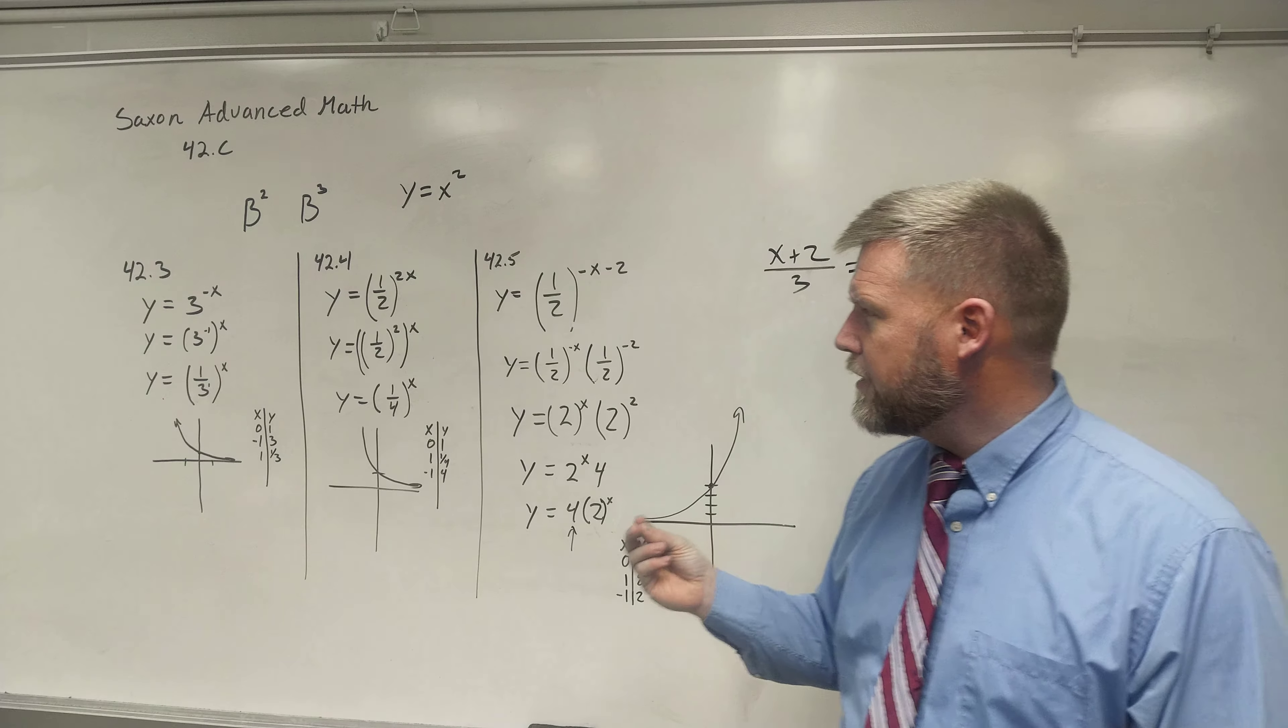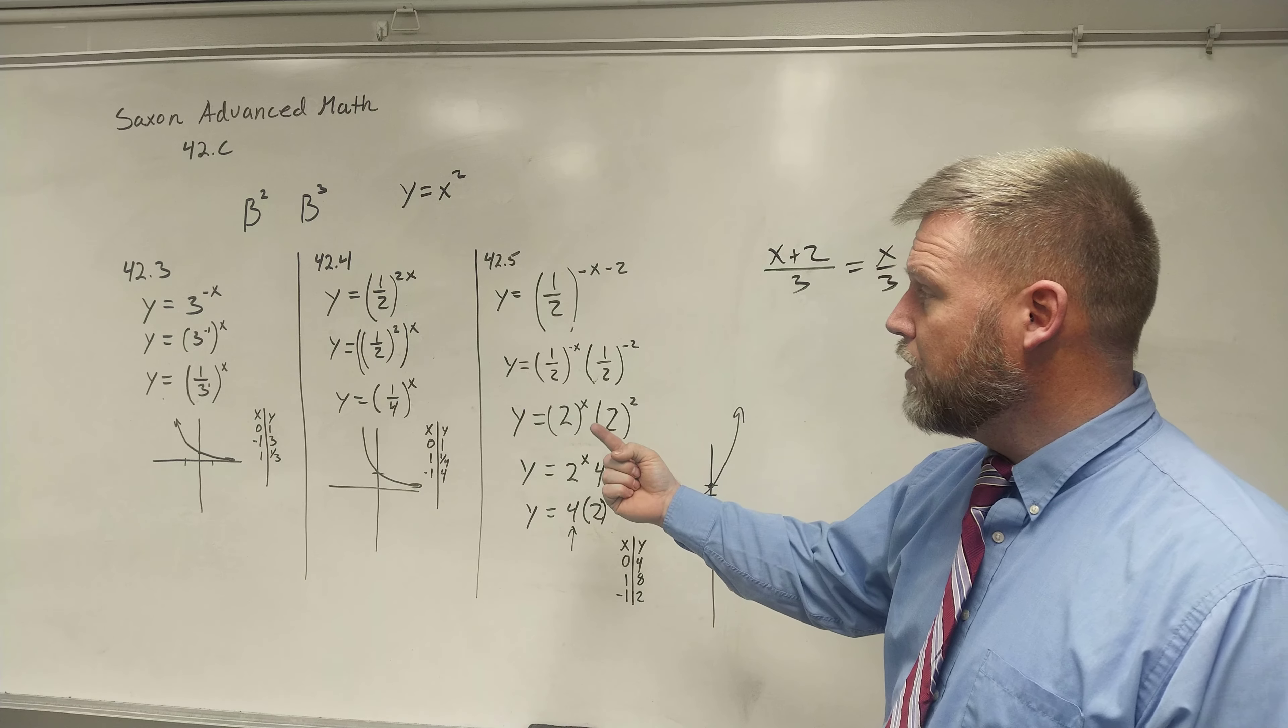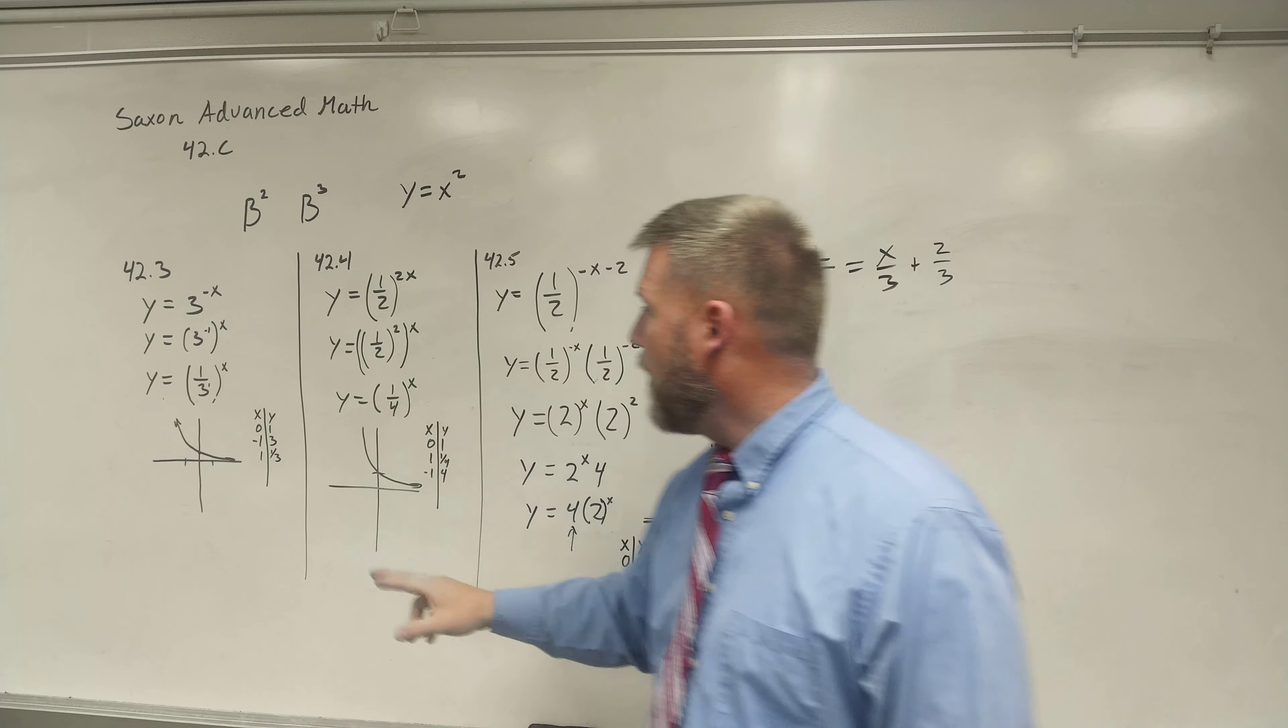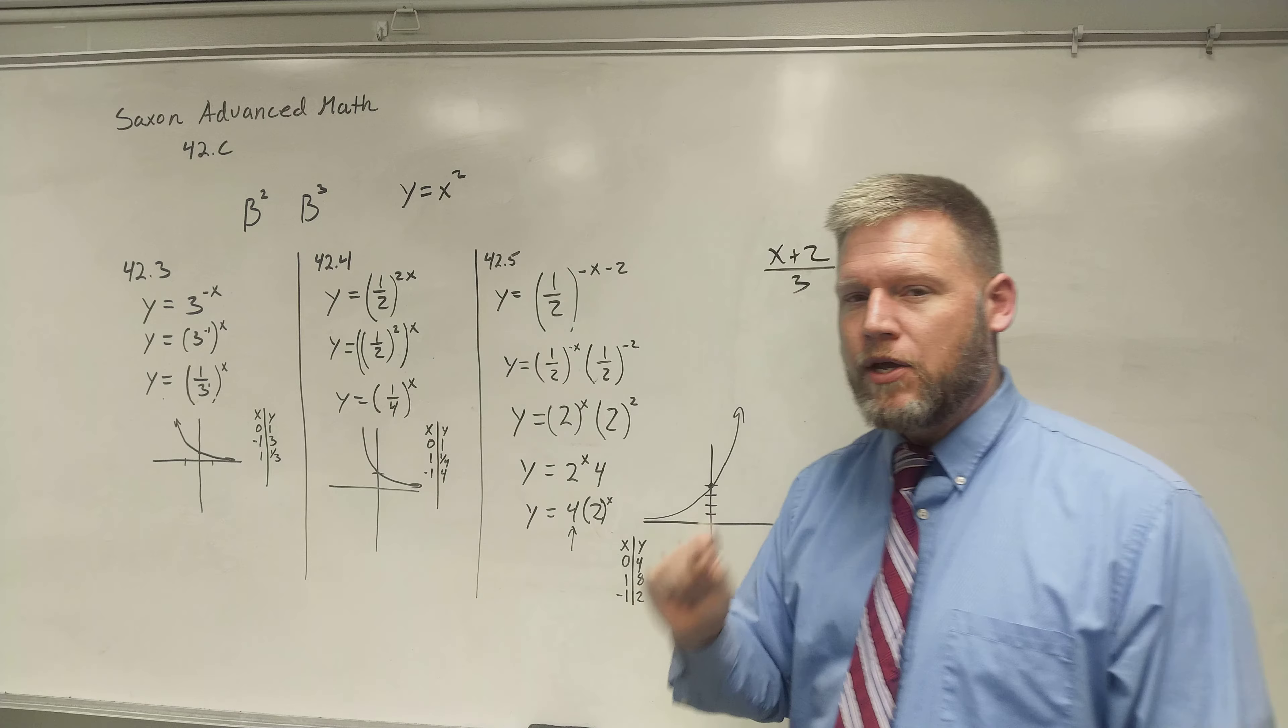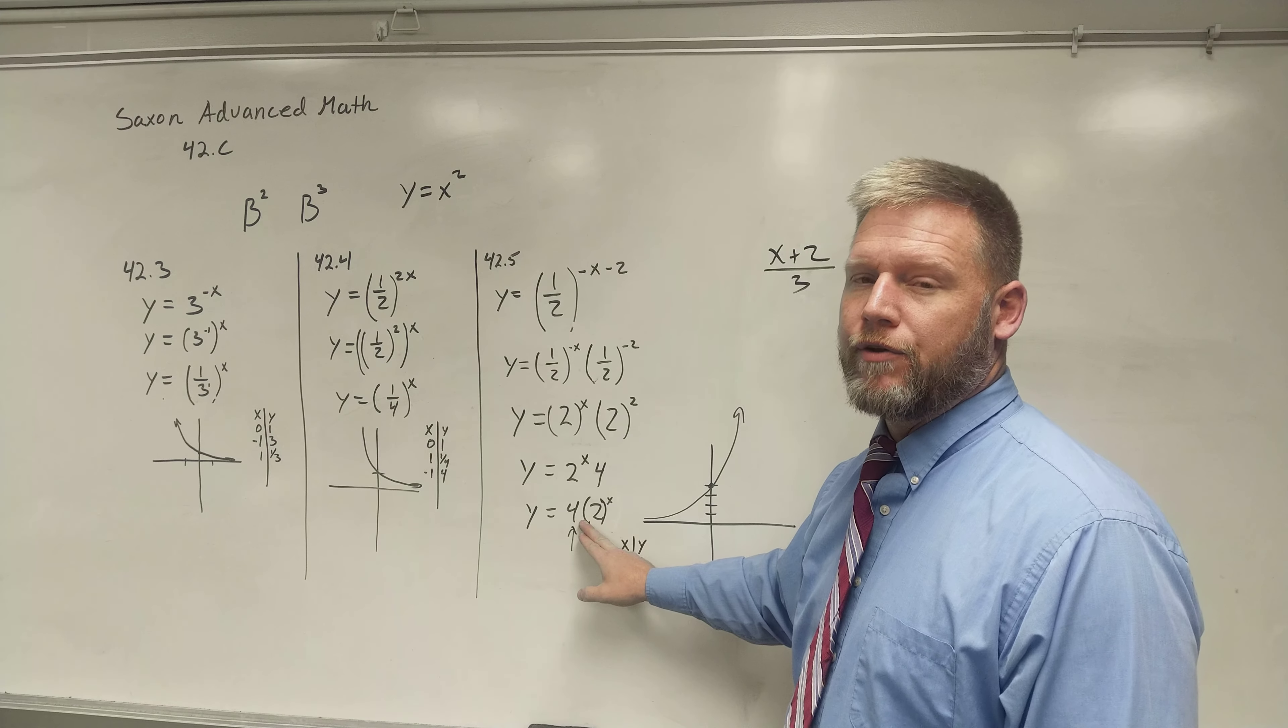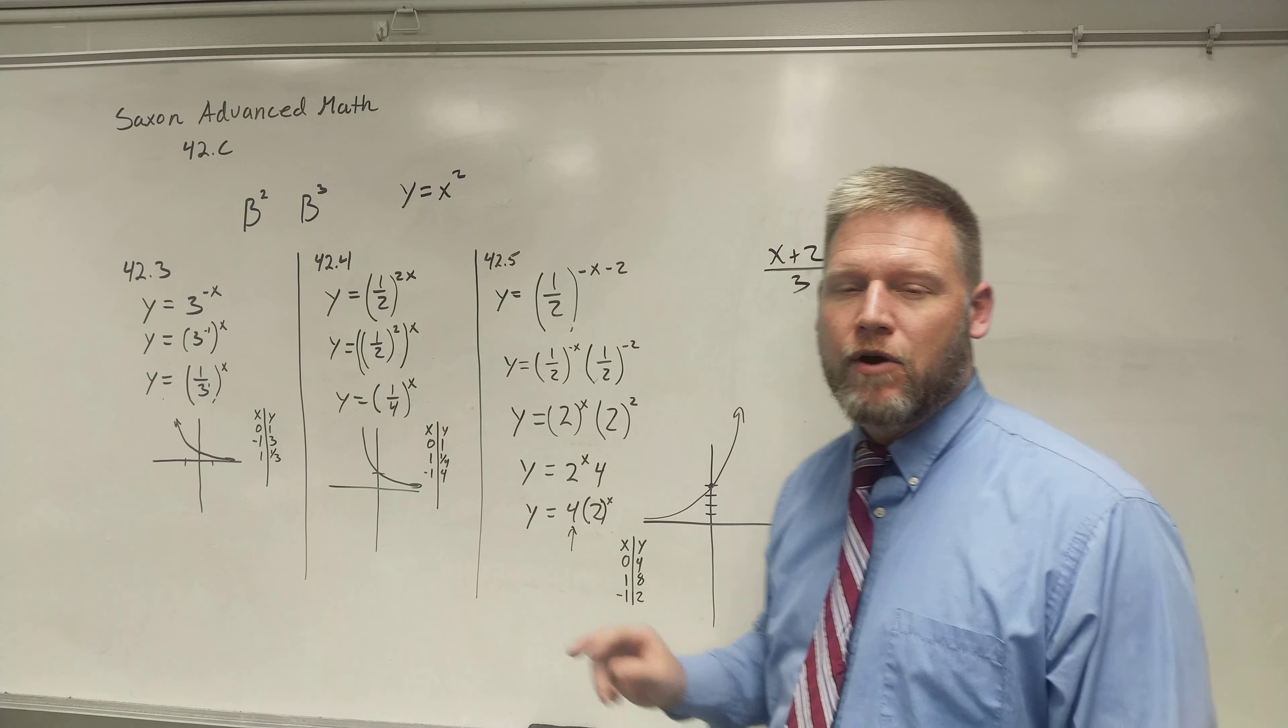The biggest things to take from this lesson: the first thing is this. You can get different values to look like something you recognize by rewriting what it is. The second thing is that the y-intercept is not always going to be 1. I can change that y-intercept by using a coefficient in the front of the constant number that's brought to the variable exponent.